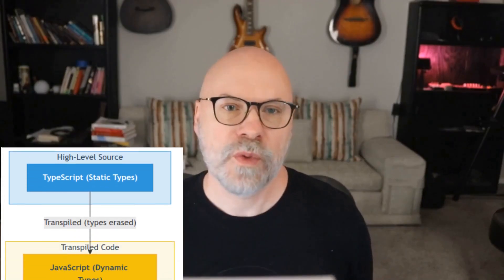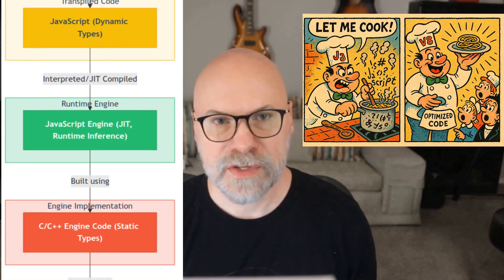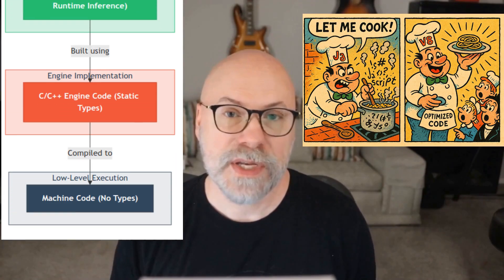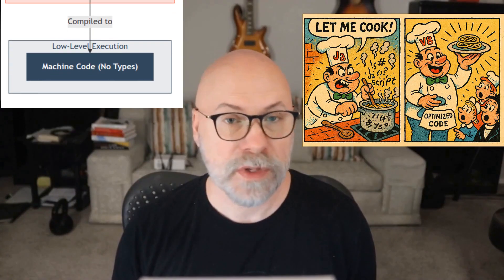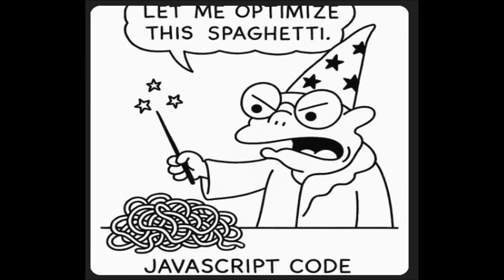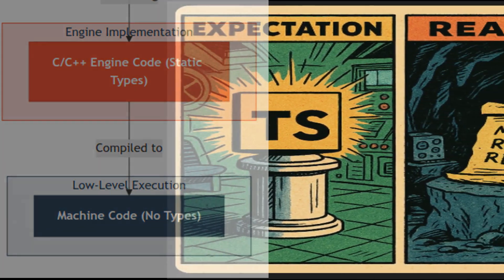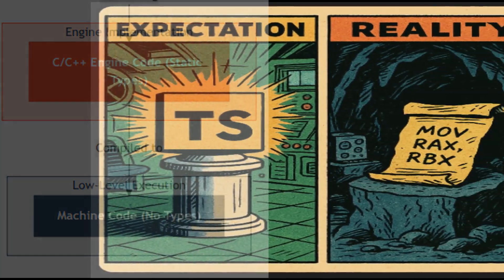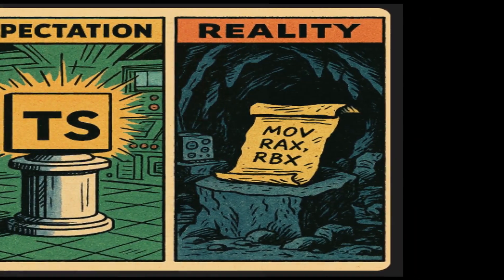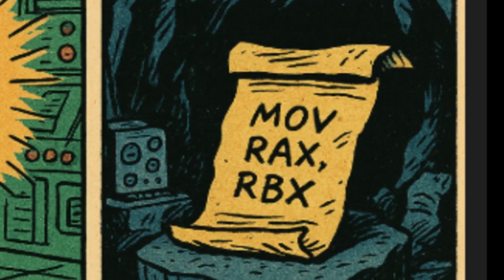The JavaScript engine is where the real magic happens. Modern JS engines like V8 use hidden classes, inline caches, and runtime profiles — it's kind of like machine learning, but for your spaghetti code. They watch your code run, look for patterns, and optimize based on guesses. At the lowest level, the machine code has no types, no interfaces, no helpful error messages — just raw instructions.